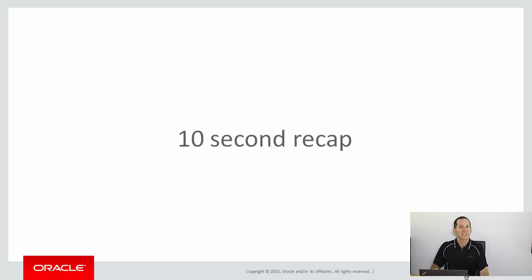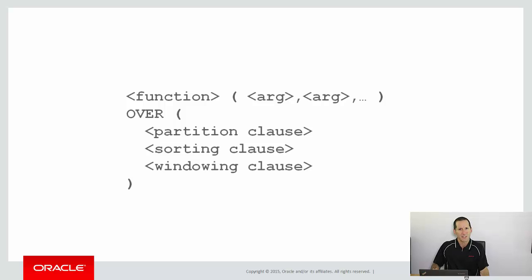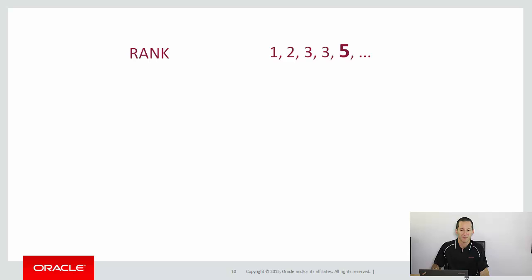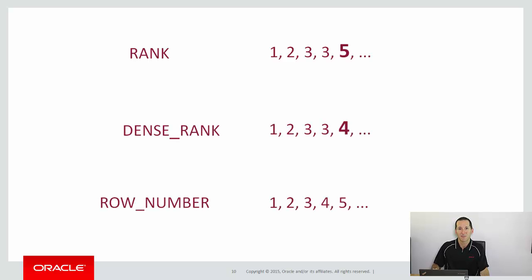Let's do a 10-second recap. So far we've really only touched the surface with analytics — we haven't looked at partitioning clauses or windowing clauses. We've just looked at some of the functions and the ORDER BY clause, but even with that we can solve some powerful problems. So far we've covered RANK, DENSE_RANK, and ROW_NUMBER — let's put them to use today.